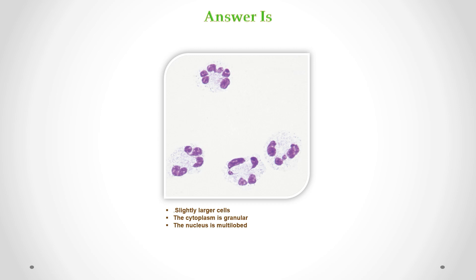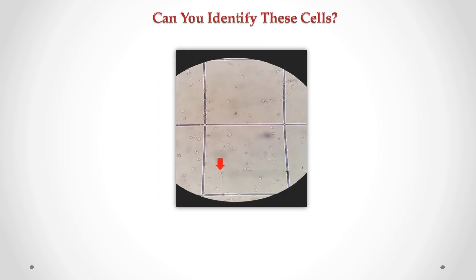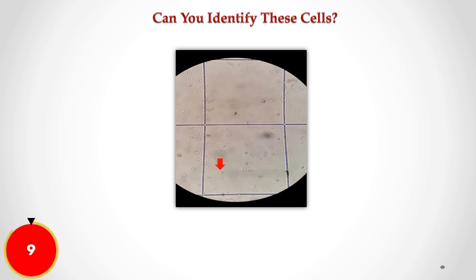Correct answer is neutrophils. We can see slightly larger cells, with granular cytoplasm and a multi-lobed nucleus. Can you identify this cell in CSF?